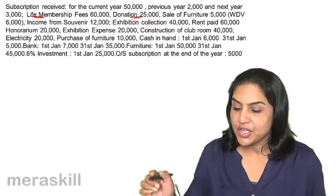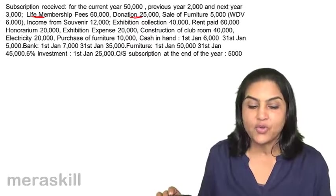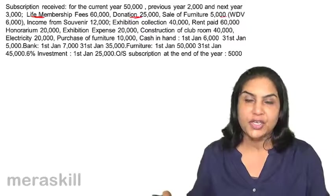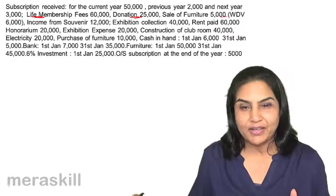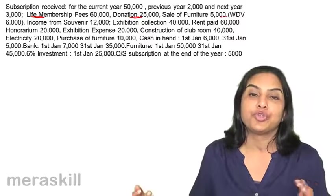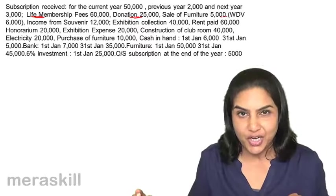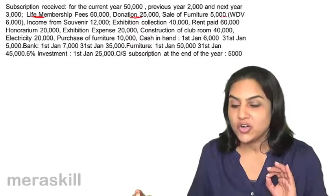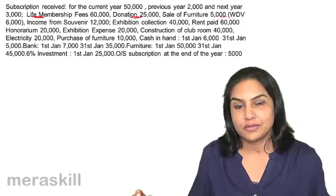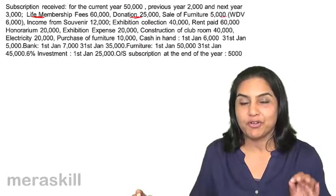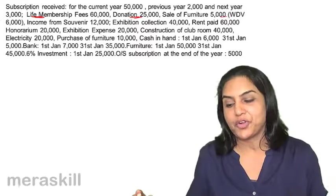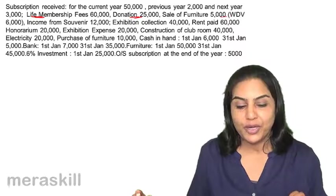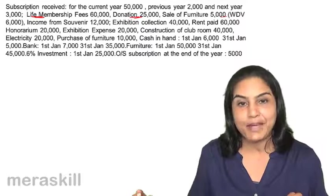Sale of furniture is 5,000 with a written down value of 6,000. That means we sold furniture. Sale of furniture is a capital receipt, a capital item. Therefore it should not find its place in the income and expenditure account. However, if there is a profit or loss on sale of furniture, such profit or loss would appear in the income and expenditure account.